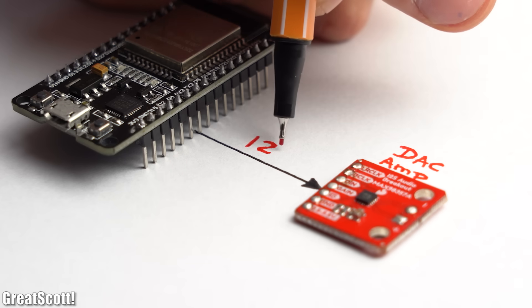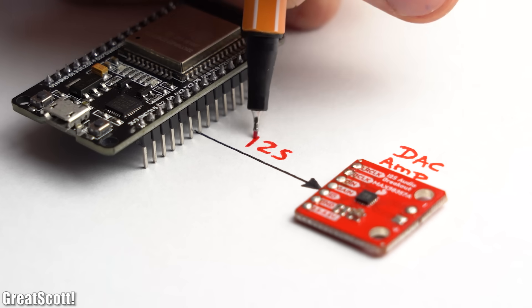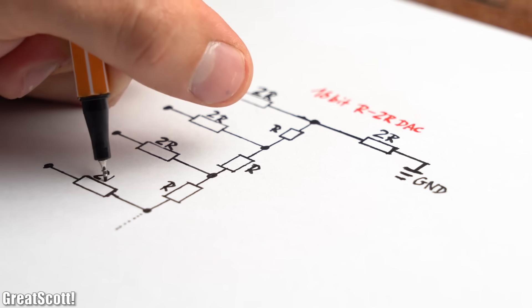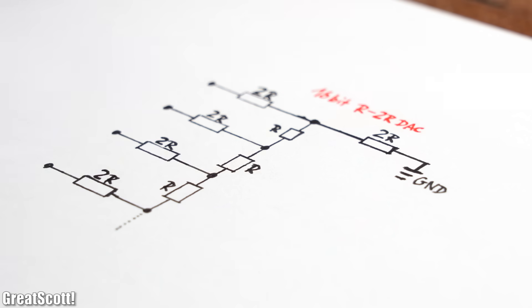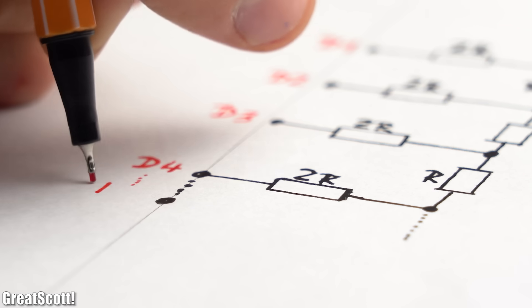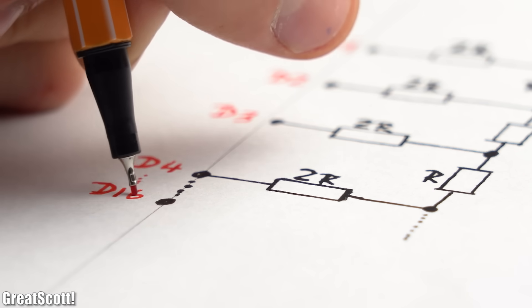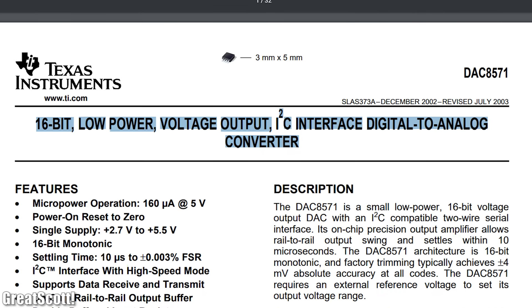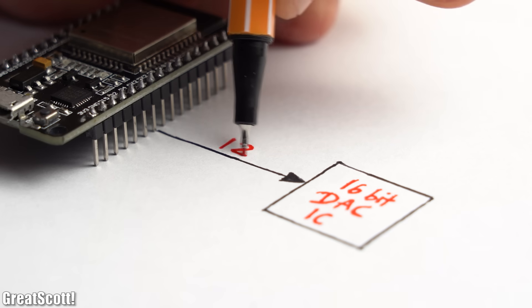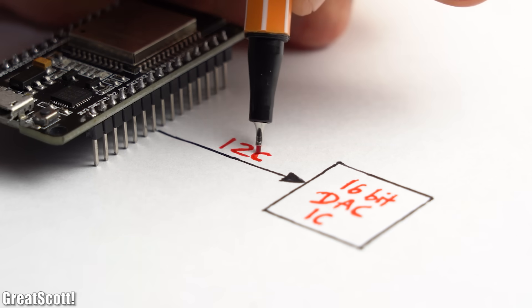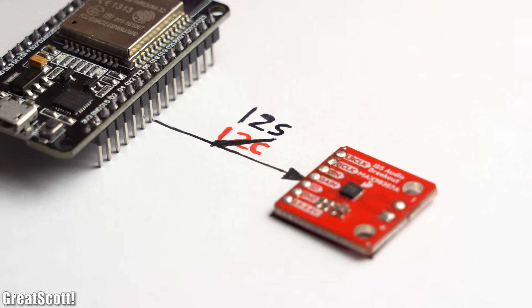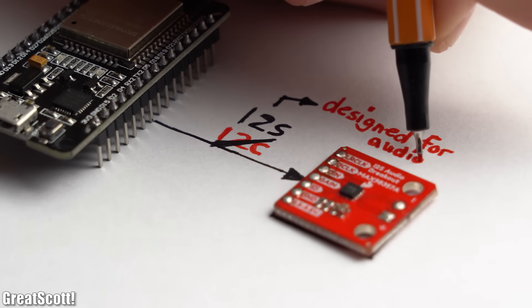First off I want to say that we are not forced to use an I2S DAC amplifier board on the output. We could also build up a 16-bit R2R DAC but that would require 16 pins of the ESP32 and thus is not practically usable. Or we could simply get a 16-bit DAC IC which we could hook up to the ESP32 through for example I2C. But then again if we already use a communication protocol, why not use I2S which was specifically designed for audio applications.